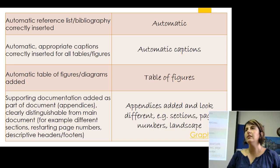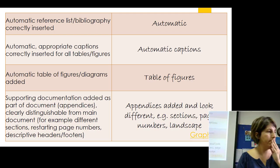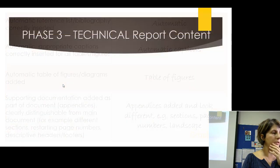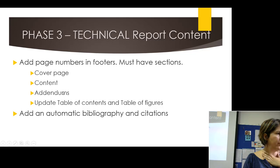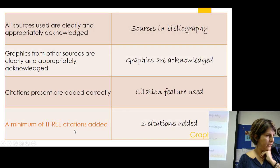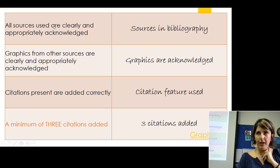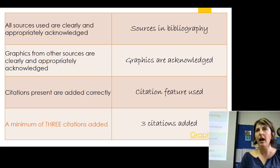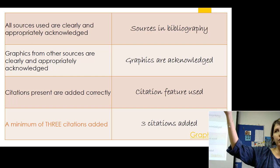But I didn't pick up that the table of contents is not double, so it should become double. The sources are acknowledged — so the bibliography is there, all the sources. The graphics are acknowledged — if there's any graphics from outside, they are acknowledged. There are citations, and then how many citations. We've got three sources, so we thought it well to add three citations.